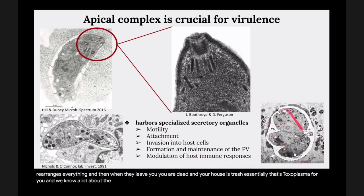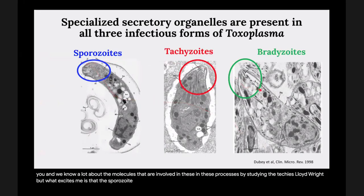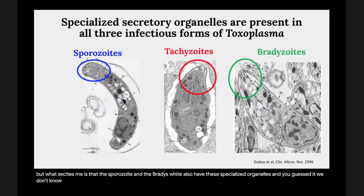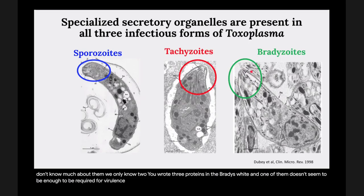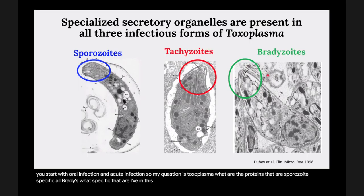We know a lot about the molecules involved in these processes from studying the tachyzoite. But what excites me is that the sporozoite and the bradyzoite also have these specialized organelles — and we don't know much about them. We only know of two rhoptry proteins in the bradyzoite. One doesn't seem to be required for virulence in mice, and the other is important for proper cyst formation. My question is: what are the proteins that are sporozoite-specific or bradyzoite-specific that are involved in host-pathogen interaction?